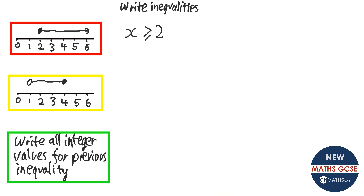For the next one, I know I need to put the smaller number, then x, then the bigger number. So 1 goes first, then x, then 4. So x is going to be greater than 1, and 4 is going to be greater than x. Can it be equal to 1? No. Can it be equal to 4? Yes — it's a filled-in dot, so I add the equals line there.